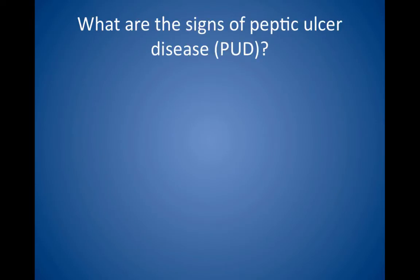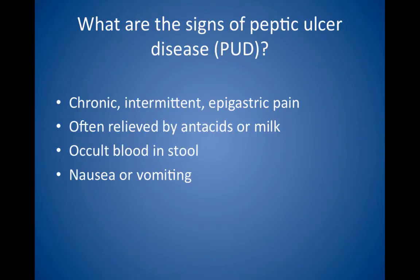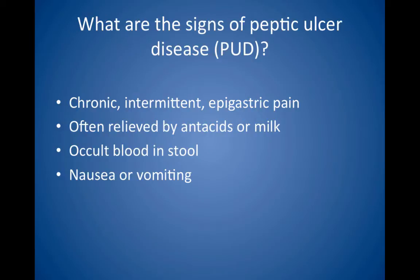What are the signs of peptic ulcer disease? The classic symptoms of peptic ulcer disease are chronic intermittent epigastric pain, which is burning, gnawing, or aching. This pain is localized and often relieved by antacids or milk. Look for epigastric tenderness. Other signs and symptoms include occult blood in the stool and nausea or vomiting. Peptic ulcer disease is more common in men. The two types of peptic ulcer disease are gastric and duodenal ulcers.